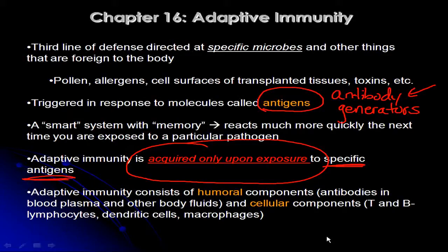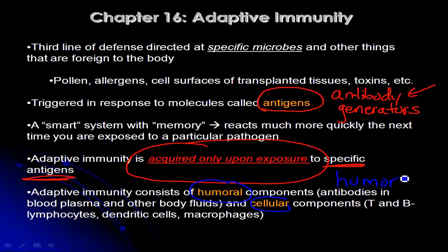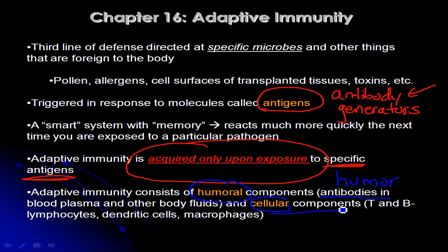Another important feature of the adaptive immune system: adaptive immunity consists of humoral components and cellular components. Humoral does not refer to funny components — humoral refers to the word humor, which is a very old term referring to body fluids like blood, urine, and mucus. So humoral in this case refers to antibodies that float around; these are proteins, not cells, that float around in your blood plasma and other body fluids trying to find antigens to bind to. Cellular immunity refers to the various types of cells involved in adaptive immunity, including T and B lymphocytes, dendritic cells, and macrophages.